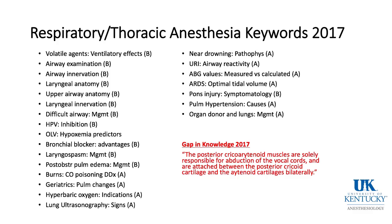A gap in knowledge refers to a keyword where more than 50% of people who took the exam in 2017 missed the question. It had to do with the posterior cricoarytenoid muscle, which is solely responsible for pulling apart the vocal cords — abduction — attached between the posterior cricoarytenoid cartilage and the arytenoid cartilage bilaterally.